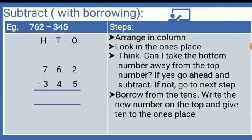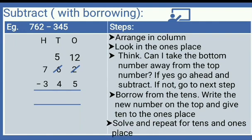When you borrow from the tens place, we write the reduced number on top and give 10 to the other place. The number in the tens is 6, so we borrow from 6. Six gets reduced to 5 and it gives 10 to the ones place. In the ones place, this 10 becomes 12 because 10 plus 2 is 12. Now we can subtract: from 12 it is possible to subtract 5, and 12 minus 5 gives us 7.